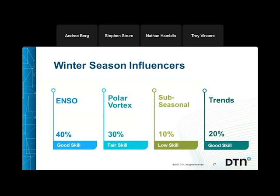Our winter seasonal influencers: the ENSO state — either La Niña or El Niño — is typically about 40% of the forecast, sometimes more or less depending on strength. The polar vortex accounts for about 30%, and while we're fairly good at figuring out if conditions are right for a disturbance, determining exactly when one will occur from a seasonal standpoint is very difficult. Sub-seasonal factors like the Madden-Julian Oscillation and snow cover weigh in at a smaller percentage — those are more forecastable on a weekly basis. Current trends are also baked into the forecast.